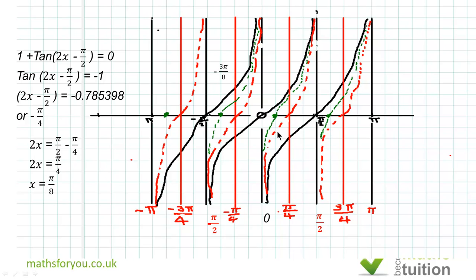And if we subtract, if we do π/8 - π/2, which is 4π/8, we get -3π/8. So those are my points on the x-axis. I'm sure you can find some more if you want to do that. And that's what the graph looks like.